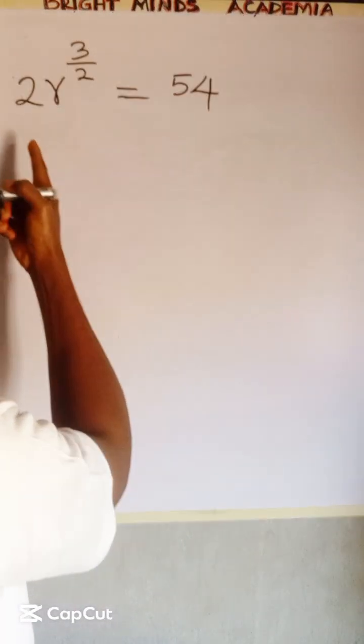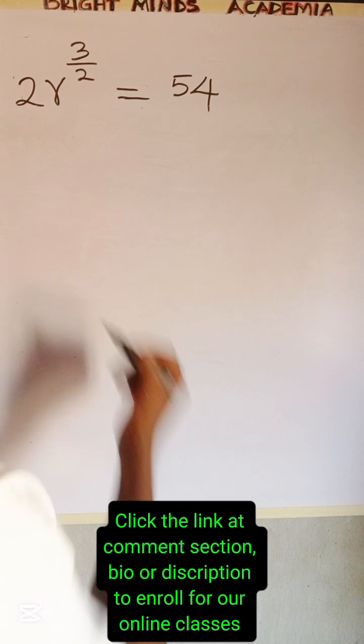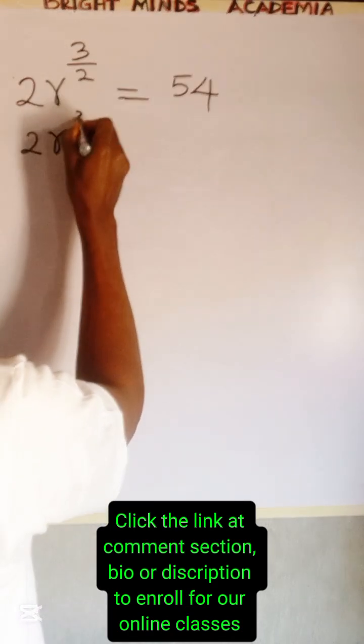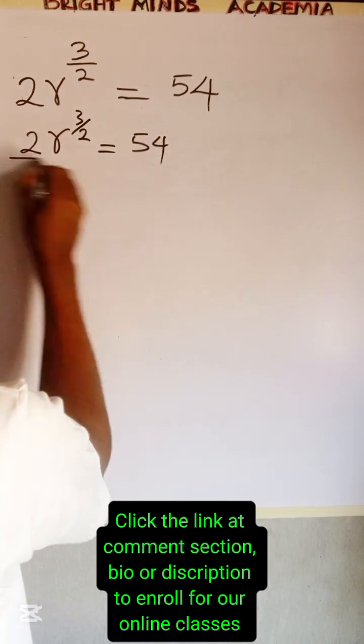Our subject is r and we have to divide both sides by 2 to make r stand alone. So we're going to have 2r to the power of 3/2 all over 2 is equal to 54, dividing both sides by 2.